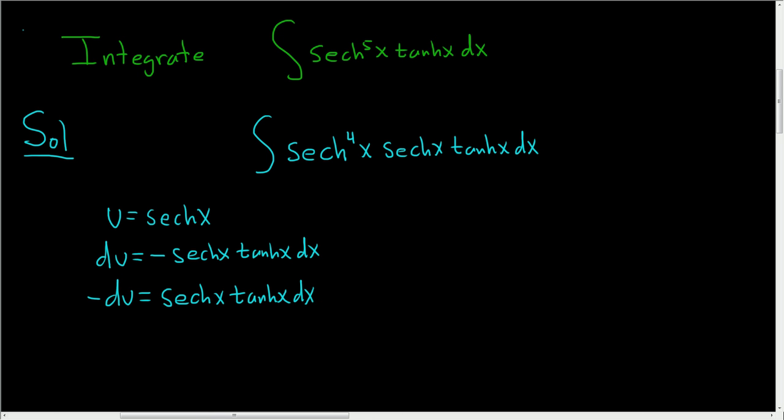And now we can go ahead and make our substitution. We know that this piece here is simply negative du and we know that the hyperbolic secant is just u. So our integral becomes negative u to the fourth du.